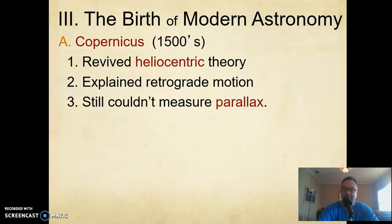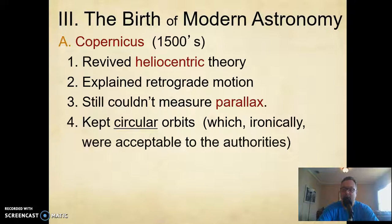Unfortunately for him, he still didn't have the technology to show why we weren't seeing a parallax shift of the stars. That's a shame, because that would have been just the end of the story right there. But he couldn't do it. Copernicus did make one mistake. He still kept circular orbits. That's a problem. But it's a minor problem. He got the major thing right, the heliocentric idea.